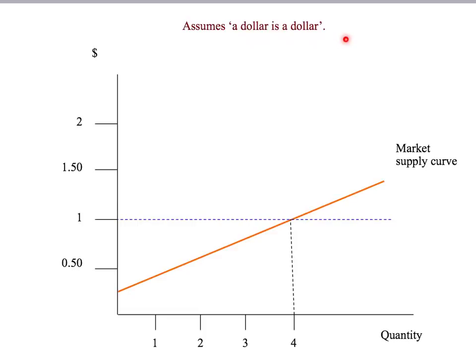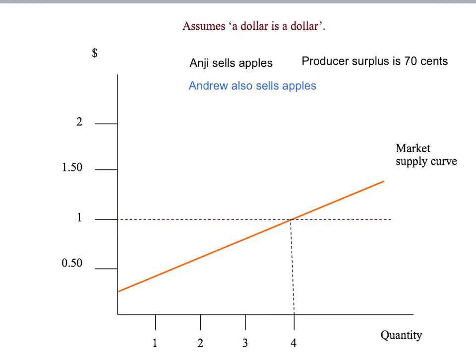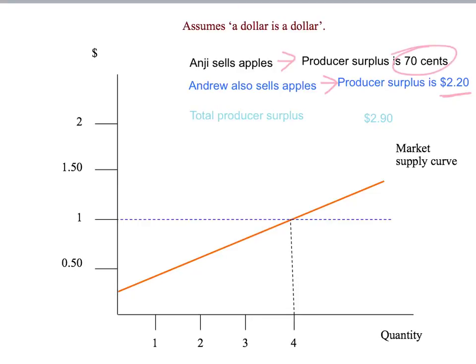Notice that we are using the dollar-is-a-dollar assumption. So if Anji sells apples and we also have Andrew selling apples, when the market price is a dollar, Anji sells two apples and gets producer surplus equal to 70 cents, and Andrew gets producer surplus of $2.20. Then we get the total market producer surplus by simply adding up their individual producer surplus: 70 cents for Anji, $2.20 for Andrew, giving us a total producer surplus of $2.90.